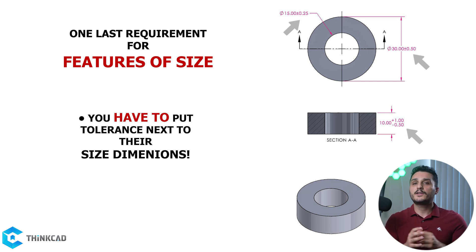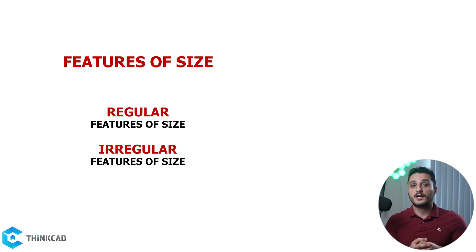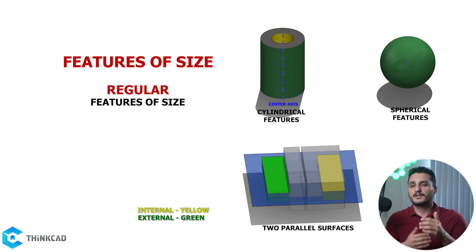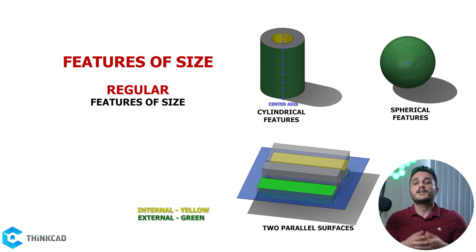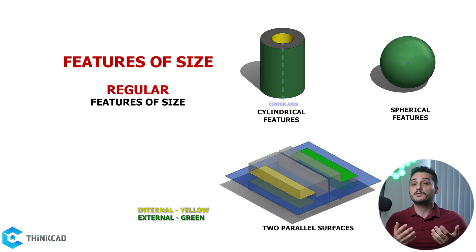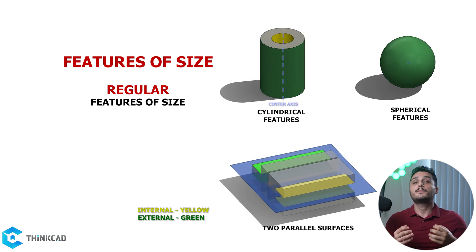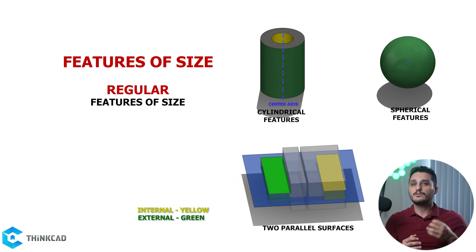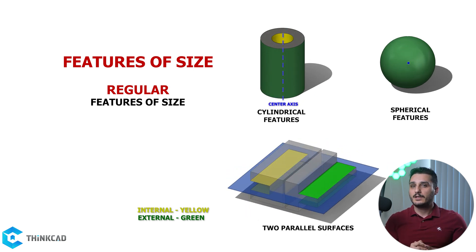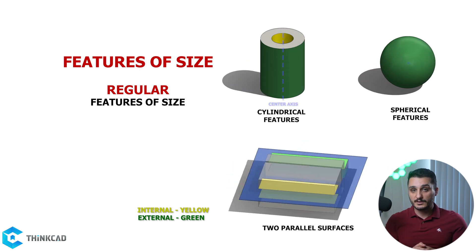Features of Size have two types: regular features of size and irregular features of size. The side cylindrical face of a pin, the surface of a sphere, and the parallel faces on a tab or a slot are all regular features of size. There is a specific video that explains irregular features of size, which have a type A and type B. You don't need to know what they are at this stage — you will learn about them down the road.